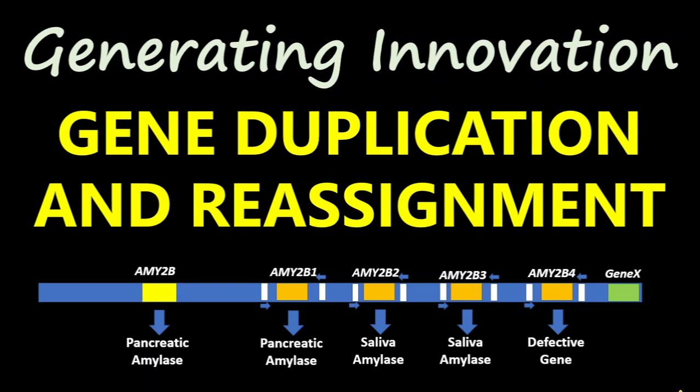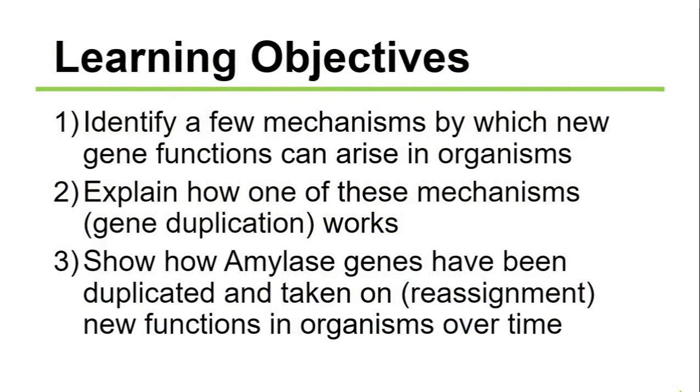More specifically, since these new abilities are likely the expression of their genetic code, we might ask: what changes could have occurred to these organisms' genomes to have given them the capacity to perform new tasks — which are new traits? Let's look at one mechanism by which the genome can generate innovations: gene duplication and reassignment.